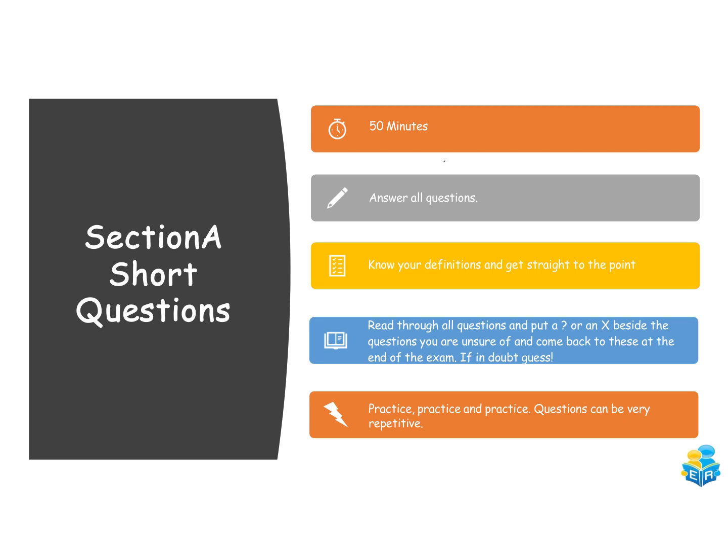I'm going to give a couple of tips for each of the sections and how you can best prepare and perform on the day. For Section A, the short answer questions, I would recommend about 50 minutes, leaving over an hour for the longer questions where more marks are going to come from. You have to answer all questions. If in doubt, guess — if you leave it blank, you're guaranteeing yourself zero marks for that part. If you put something down on paper, there's a chance you'll get some marks, and it's those marks that really do add up. It could be the difference between a higher merit and a distinction, or between a pass and a fail.